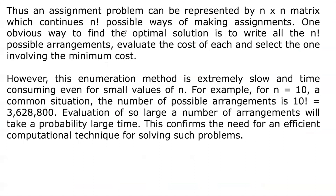There can be N factorial possible ways for making these assignments. If we list down all these possible ways, it is very time-consuming — this is called the enumeration method. It becomes very difficult when N is large. For example, for N equal to 10, we can have around 10 factorial, that is 3,628,800 possible arrangements. So listing all arrangements and finding the minimum is very cumbersome.